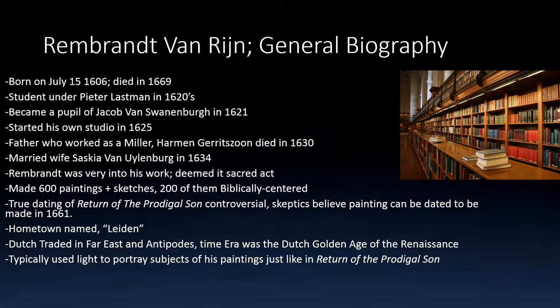Rembrandt was born on July 15, 1606, and died in 1669 during the Renaissance era, which implies that he made Return of the Prodigal Son four years before he died. However, the exact dating of the painting is controversial — among skeptics, it is possible that the painting was really made around 1661. In 1621, Rembrandt became a pupil and set up his own studio. In 1625, he married his wife Saskia van Uylenburgh in 1634, four years after his father, a miller, died in 1630.